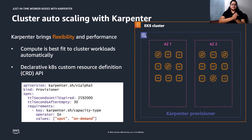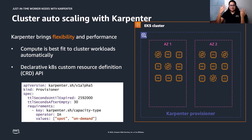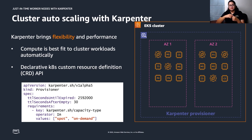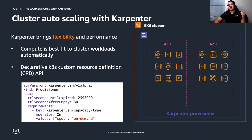The central concept in Karpenter is the Provisioner, implemented using Kubernetes custom resources — a modern, standard way to write controllers. A Provisioner defines how Karpenter will manage unschedulable pods and expired nodes. It comes with smart defaults that are fully configurable, including instance type selection, launch template generation, subnet, security groups, and more.